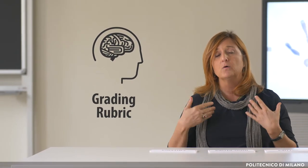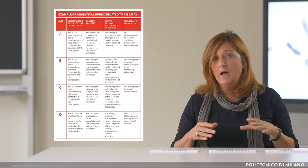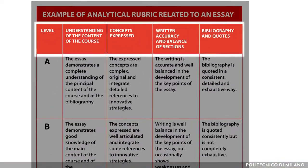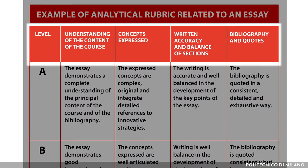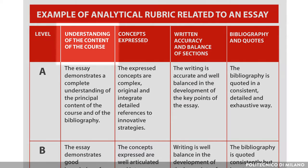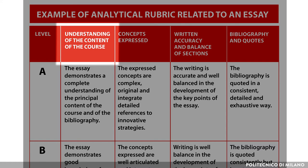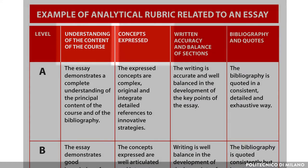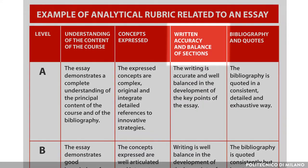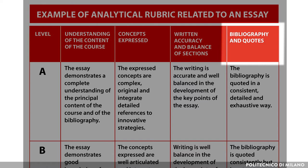The rubric is a conceptually simple tool — an organized table where we find the description of the criteria. In this case we are looking at a rubric that can help us grade an essay. Potential criteria could be the comprehension of content that comes through from the essay, the quality of the expressed concepts, the accuracy of the writing, and the management of bibliography and quotes.